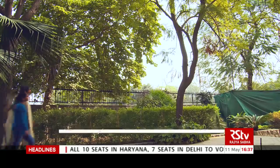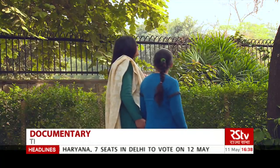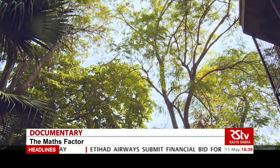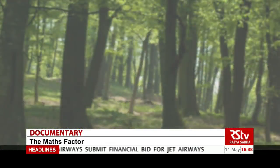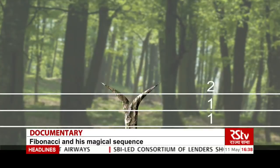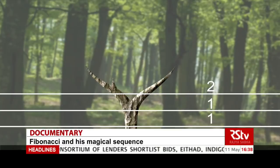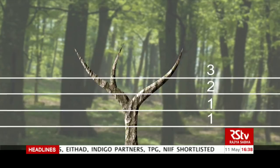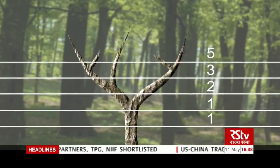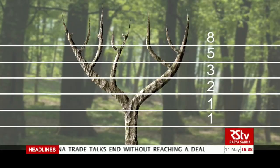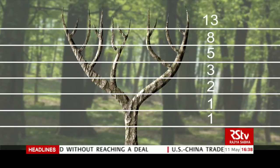Yukta's mother then takes her to examine a tree. If we look carefully at how a tree branches, we can see the sequence at work again. A main trunk grows till it produces a branch; then one of the new stems branches into two while the other lies dormant, leading to three branches. Then the first two branch into two while the third lies dormant, leading to five branches. The pattern repeats, and if we study the number of branches as the tree grows, we get the Fibonacci sequence.